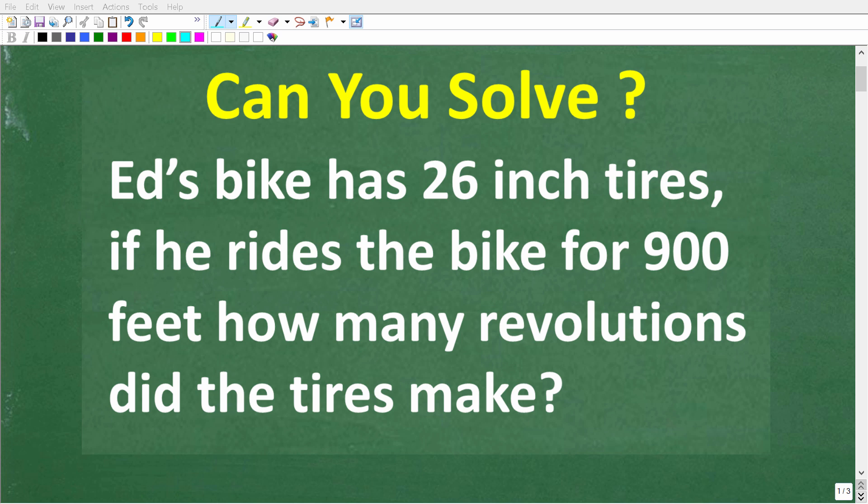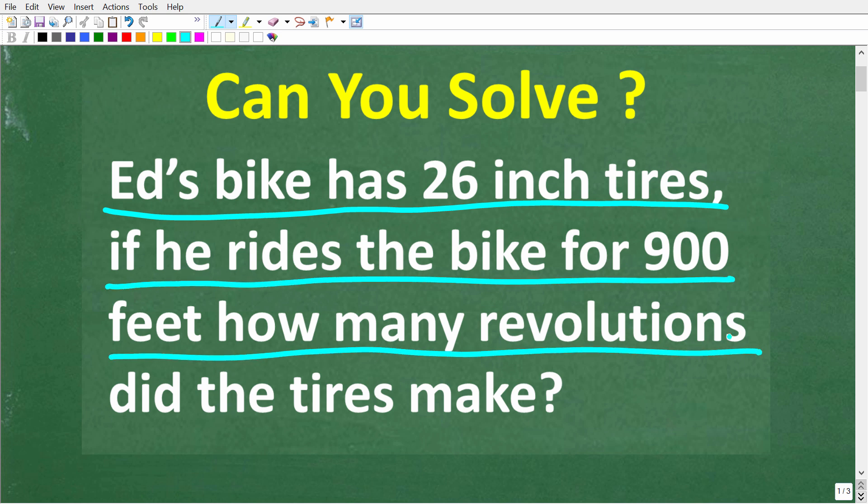Okay, so let's see if you know enough math to figure out how to solve this math word problem. Here is the question: Ed's bike has 26 inch tires. If he rides the bike for 900 feet, how many revolutions or turns did his tires make?